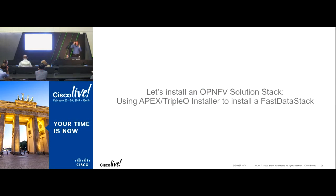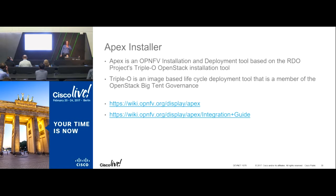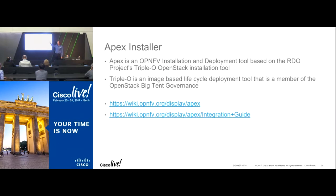Let's take a look at how the installation works. With Apex or TripleO as the installer — TripleO stands for OpenStack on OpenStack, meaning it uses an OpenStack instance to install OpenStack. It's largely supported by Red Hat but is an open source project under the OpenStack umbrella. In OPNFV we did certain tweaks to allow for NFV-specific network configuration on top of the standard TripleO installer.